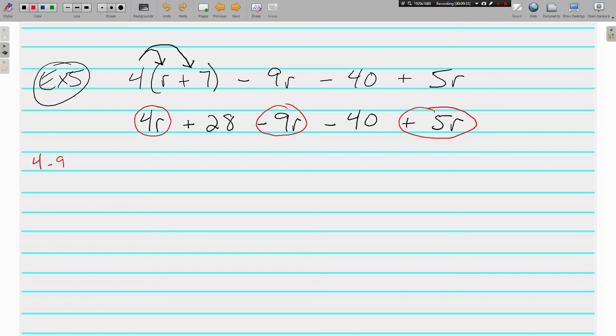4 minus 9 plus 5. You can throw that in your calculator if you need to. But right here we know negatives are going to win by 5. And oh, here we have additive inverses, which are 0. So actually, we don't have any r's. We have 0 r's, but we're not going to write that down. We're not going to write down 0r, because we know 0 times anything is 0.